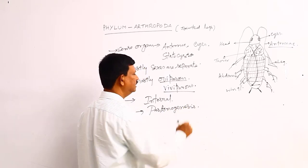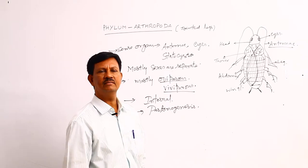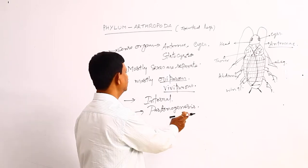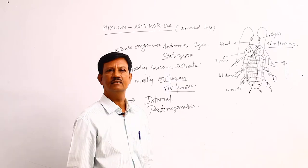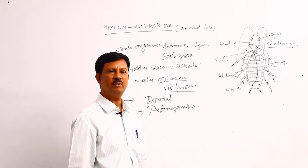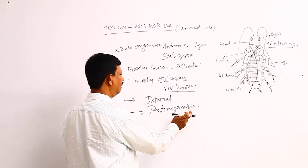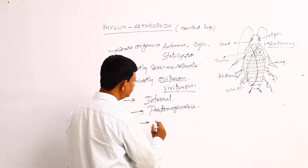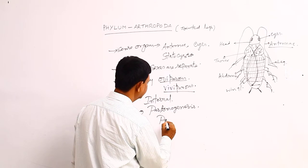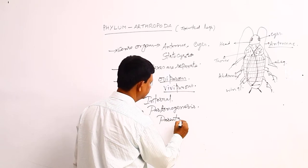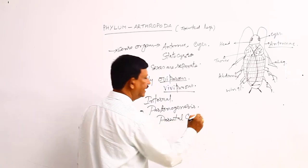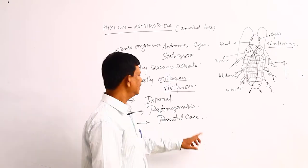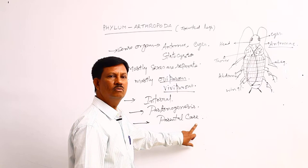What does parthenogenesis mean? Male and female gametes do not unite with each other, and they produce new individuals. For example, honeybees exhibit parthenogenesis. And parental care is also found — where parents take care of their young ones. In some animals, parental care is also present.